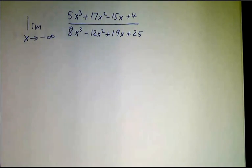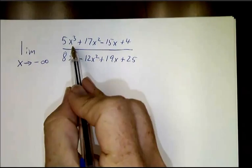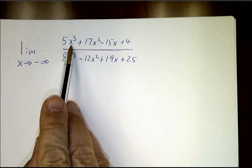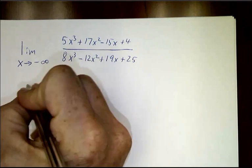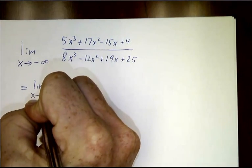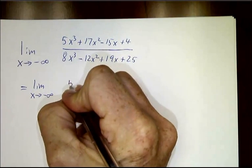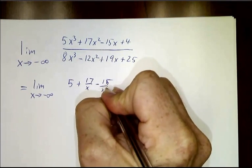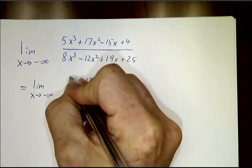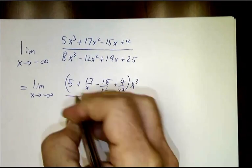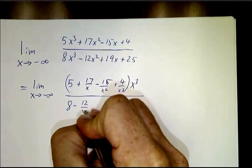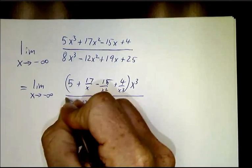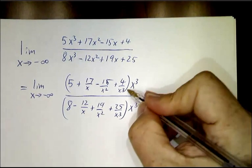Another example is we have this. Here, the term that grows the fastest is x cubed. So, we're going to factor out an x cubed from the top and we'll also factor out an x cubed from the bottom. So, this is the limit of 5 plus 17 over x minus 15 over x squared plus 4 over x cubed, all times x cubed, divided by 8 minus 12 over x plus 19 over x squared plus 25 over x cubed, times x cubed, and then we cancel the x cubes.